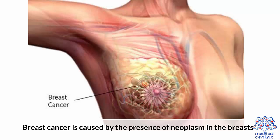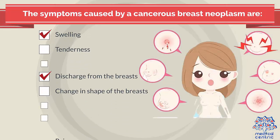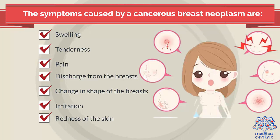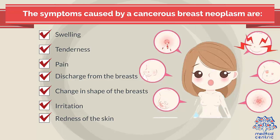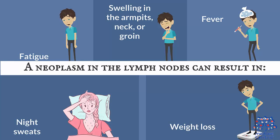Breast cancer is caused by the presence of neoplasm in the breasts. The symptoms caused by a cancerous breast neoplasm are: 1. Swelling, 2. Tenderness, 3. Pain, 4. Discharge from breasts, 5. Change in the shape of the breasts, 6. Irritation, 7. Redness of the skin.